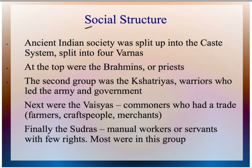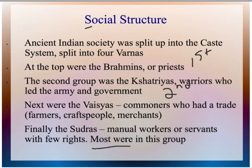Ancient India was split up into a caste system with four separate varnas. At the top are the Brahmins, or the priests. The second group were the Kshatriyas — warriors who led the army and government. Note that the priests are first, whereas warriors and government are second; this is different from the other civilizations we've studied. Next were the commoners in trade — farmers, craftspeople, and merchants — and finally the Sudras, or manual workers and servants with few rights. Most people were in this group, making it the largest category.